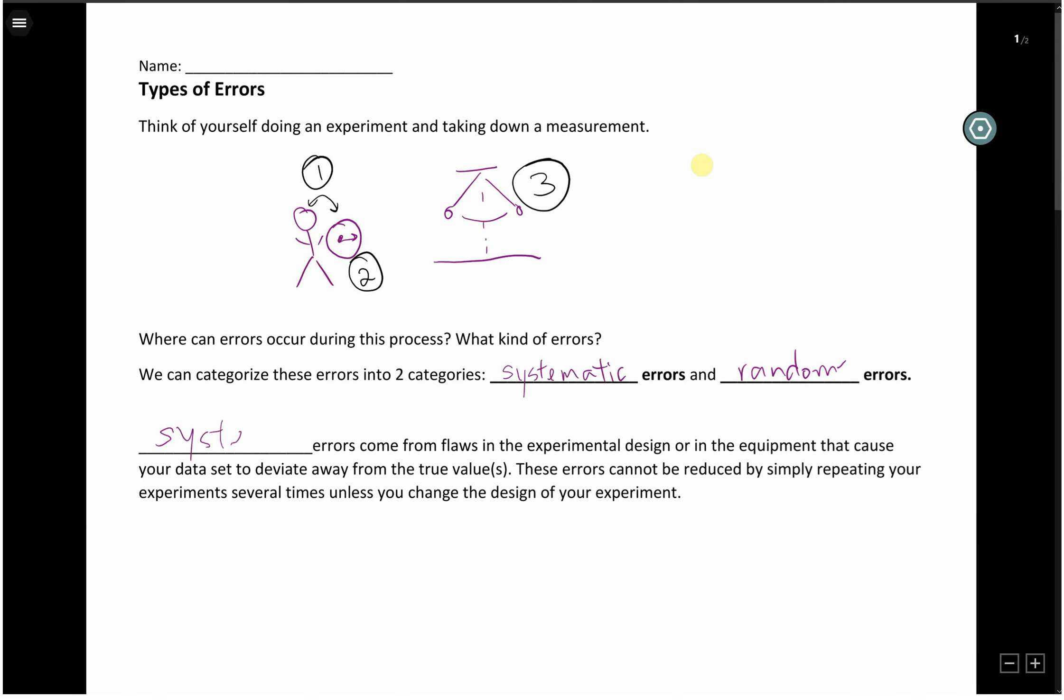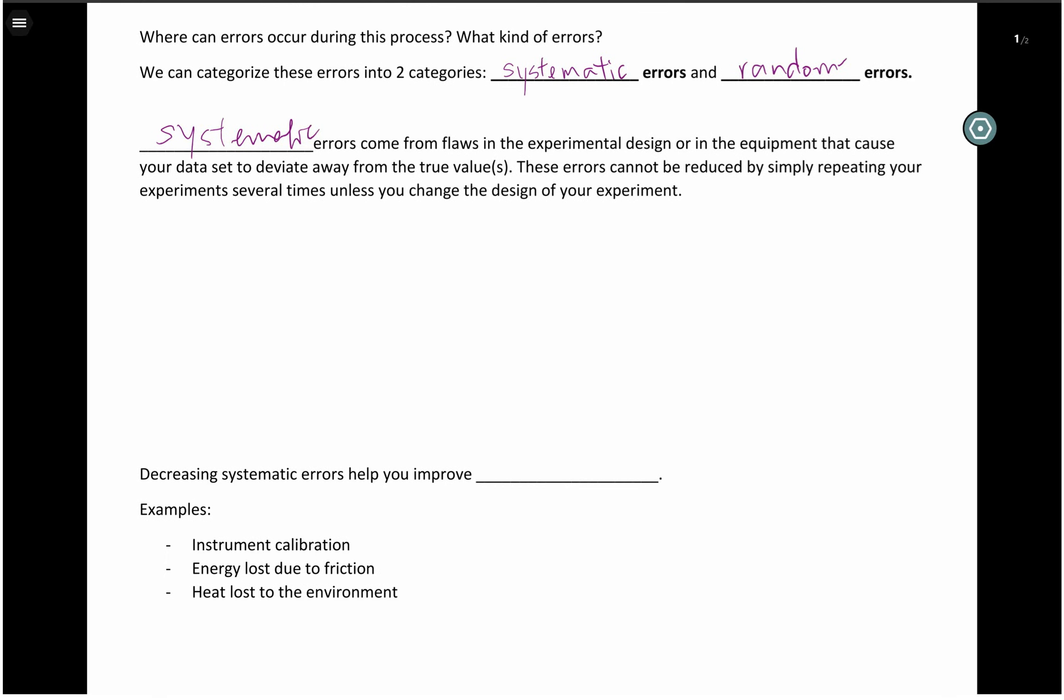Systematic errors come from flaws in the experimental design or the equipment that cause your data set to deviate away from the true value or values. These errors cannot be reduced by simply repeating your experiment several times, unless you change the design of your experiment or you do something with the equipment. This might strike a bell. And you might be recalling that lesson on accuracy and precision, and yes, you are bang on. Systematic errors cause you to be less accurate, which means decreasing systematic error helps you improve accuracy.